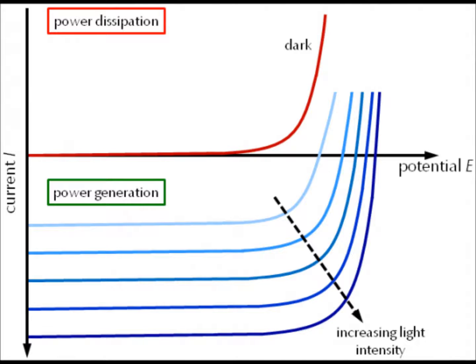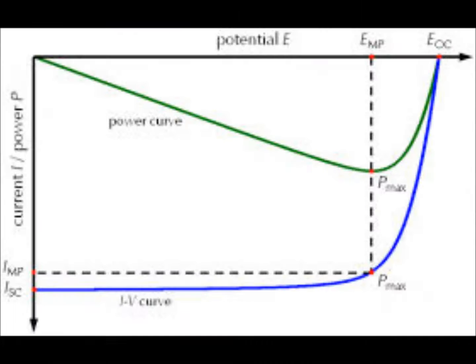First of all, you should have some equipment to calculate it. In our lab, we use what we call a potentiostat — the brand is Autolab. For the potentiostat, the procedure we use is linear sweep voltammetry. When you use linear sweep voltammetry, you just have to fix the starting voltage and the stop voltage.